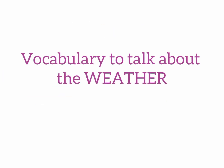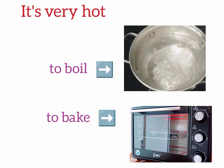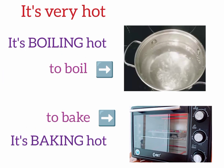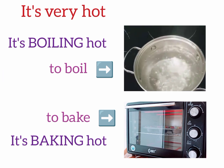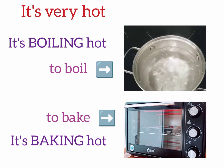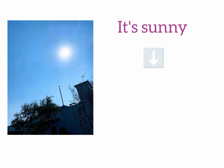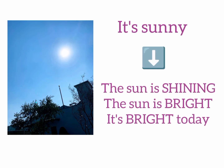Now let's learn some advanced vocabulary to talk about the weather. Instead of saying it's very hot, you can say it's boiling hot or it's baking hot. Synonyms for it's sunny: the sun is shining, the sun is bright, or it's bright today.